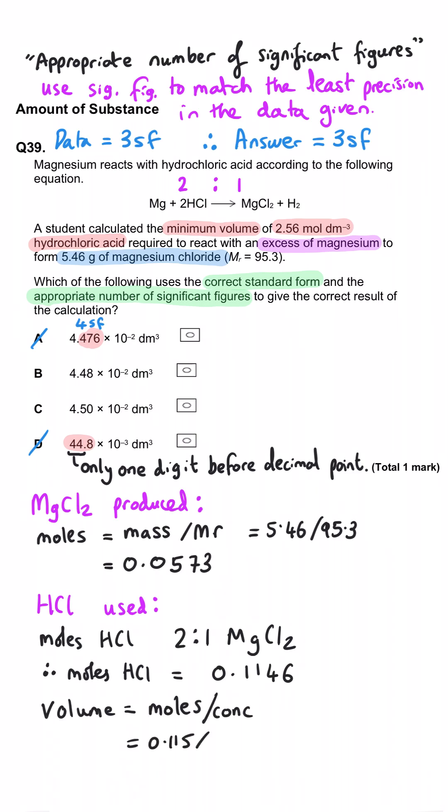We know the concentration is 2.56. And we know that moles is concentration times volume. So the volume is moles divided by the concentration. And that gets us 0.0448. And so that means that B is the correct answer once we convert that to standard form.